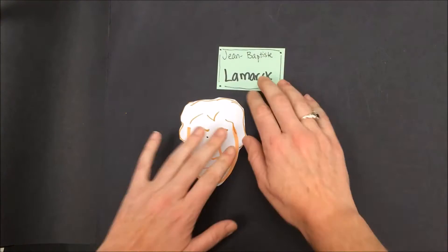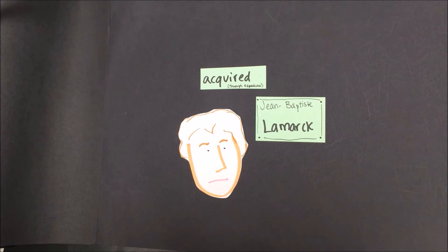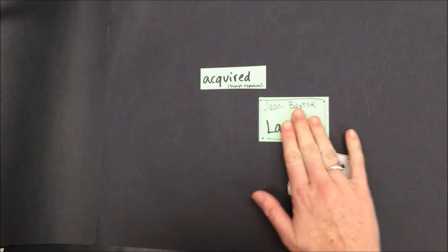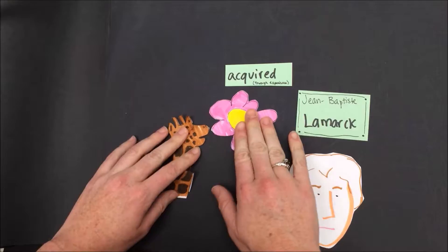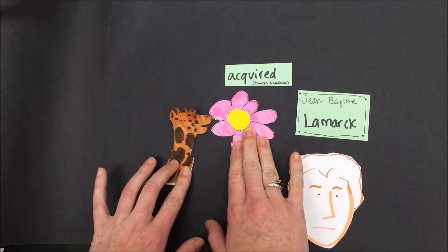One scientist with early theories about evolution, or how species came to change over time, was a scientist named Lamarck. Lamarck believed that changes in species occurred because of acquired traits, or things that happened because of the experiences in an organism's life. A famous example of what Lamarck believed is in the case of giraffes. Lamarck said that as long as giraffes could reach plenty of food, their necks would stay short.